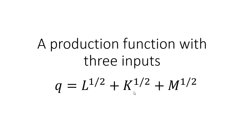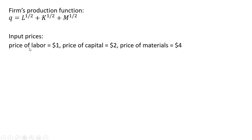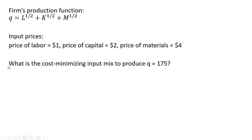We're going to take a look at this production function with three inputs and find the cost-minimizing input mix. We have this firm's production function as a function of labor, capital, and material. The input prices are as follows: the price of labor L is $1, the price of capital K is $2, and the price of materials M is $4. What is the cost-minimizing input mix to produce 175 units of output?